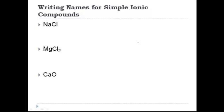So the first one, NaCl. When you write the name for an ionic compound, the name of the cation — the element that comes first — is just the name of that element. So NA is just sodium. And then the anion, the one that comes second and has the negative charge, is also the name of the element, but instead of the ending that the element has, you're going to change it to an "-ide" ending. So chlorine becomes chloride.